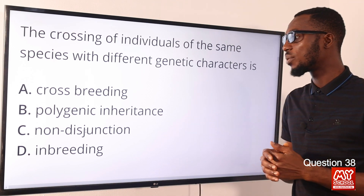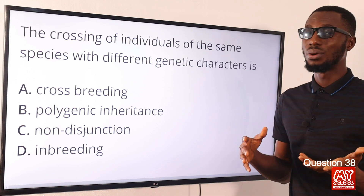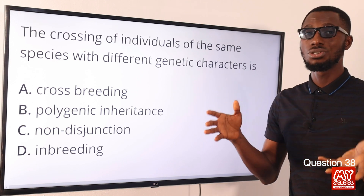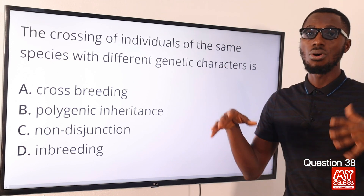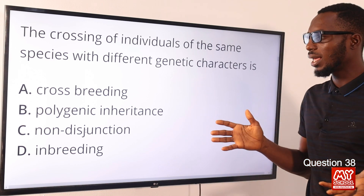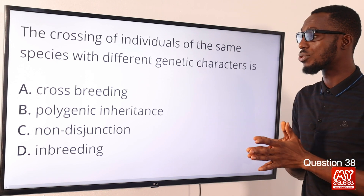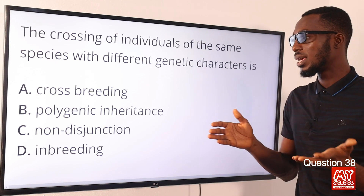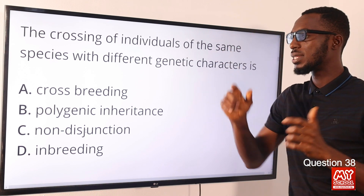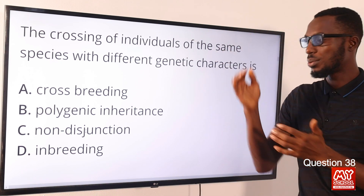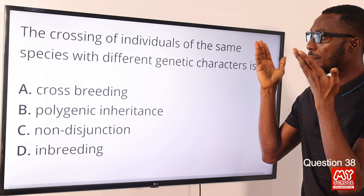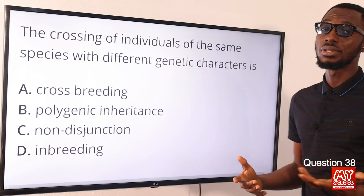Polygenic inheritance is when a character is controlled by many genes located on different chromosomes. Non-disjunction occurs when a homologous chromosome fails to separate during gamete formation — for example, two capital R chromosomes refusing to separate during crossing. Inbreeding is the crossing of related individuals. The best answer here is option A for crossbreeding.